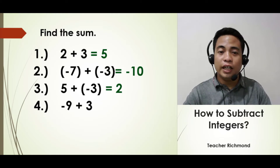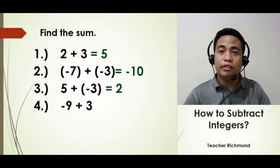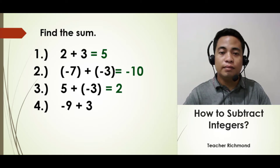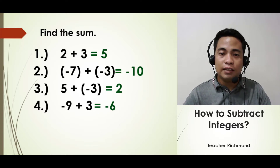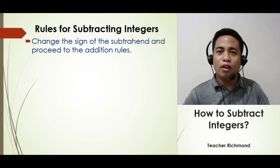Let's proceed to the next example: negative 9 plus positive 3. They don't have the same sign, so you just get the difference of both integers and copy the sign of the integer with the greater absolute value. The answer is negative 6.